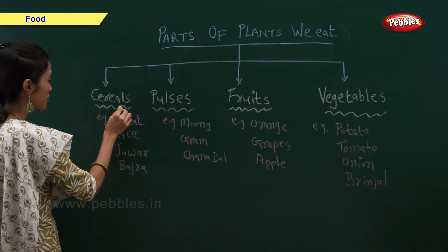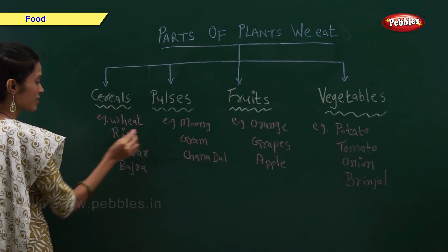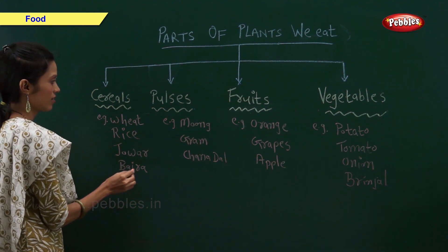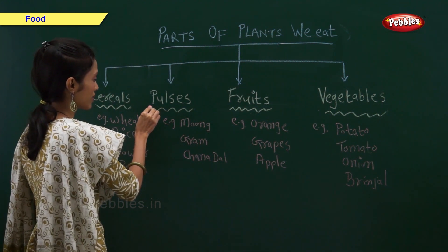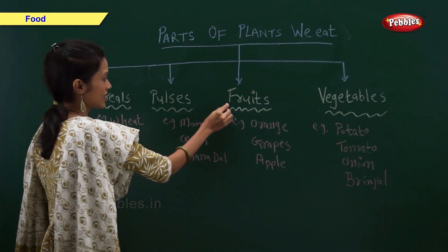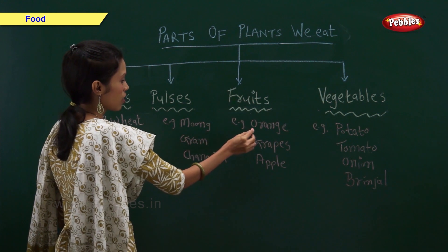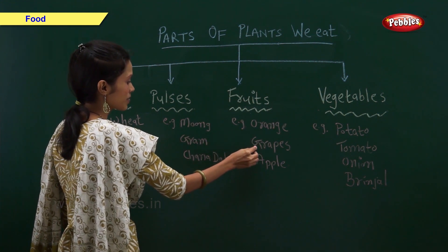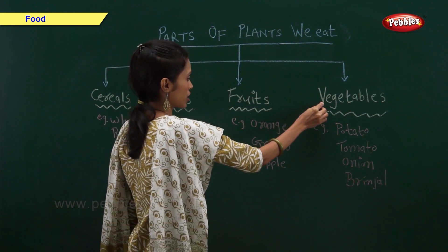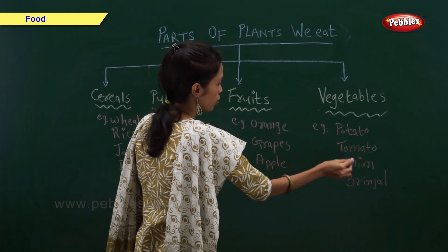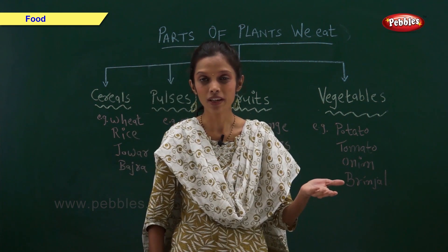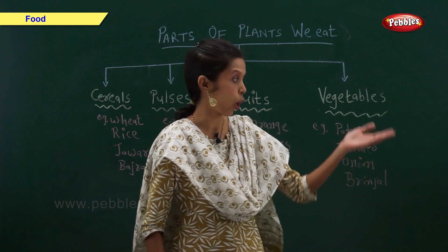So, examples of cereals are wheat, rice, jowar and bajra. Examples of pulses are moong, gram and chana dal. Examples of fruits are orange, grapes and apple. Examples of vegetables are potato, tomato, onion and brinjal. Now, let us take a look at some more examples of each.